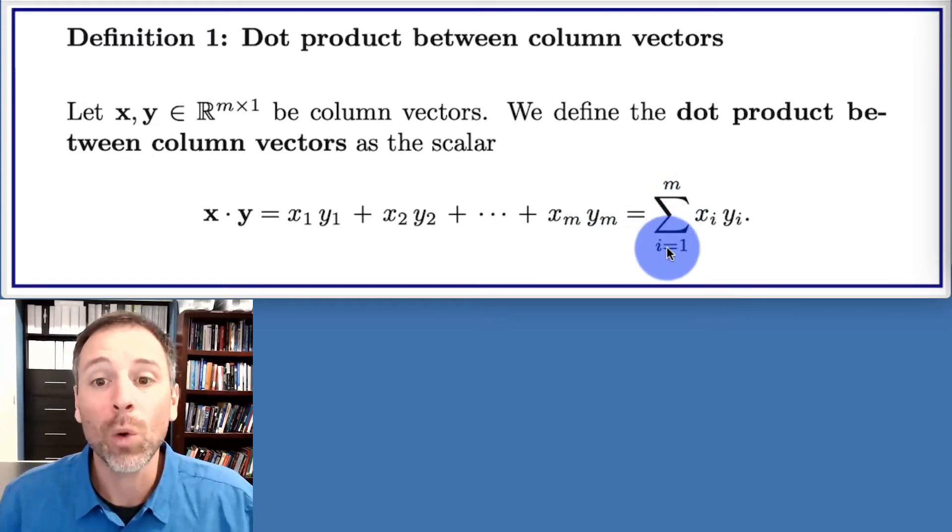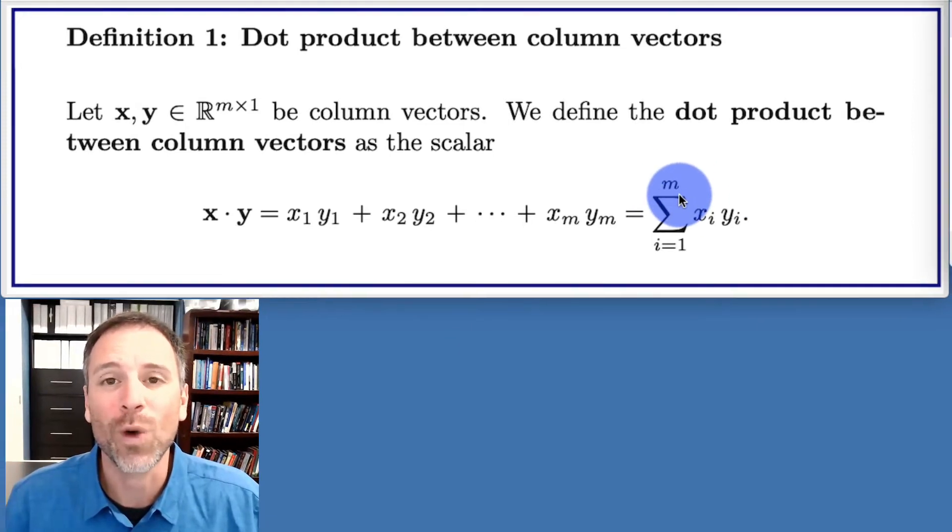We can write that as the sum going through the rows, so I'll use the index i. We go from the first row, then we multiply the entries in the first row x1 times y1, then we go to the second row, the index updates, plus x2 times y2 plus all the way to the end until we get to the mth row, which is xm times ym.